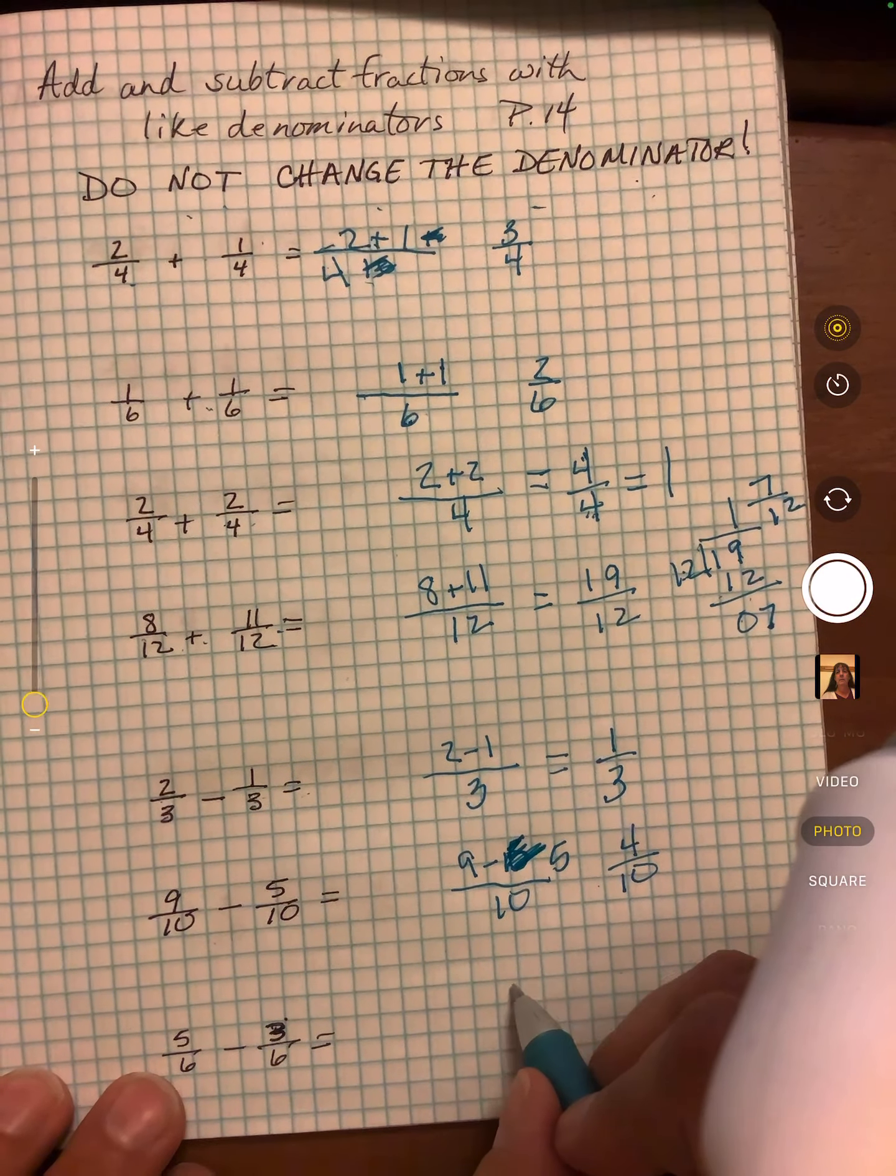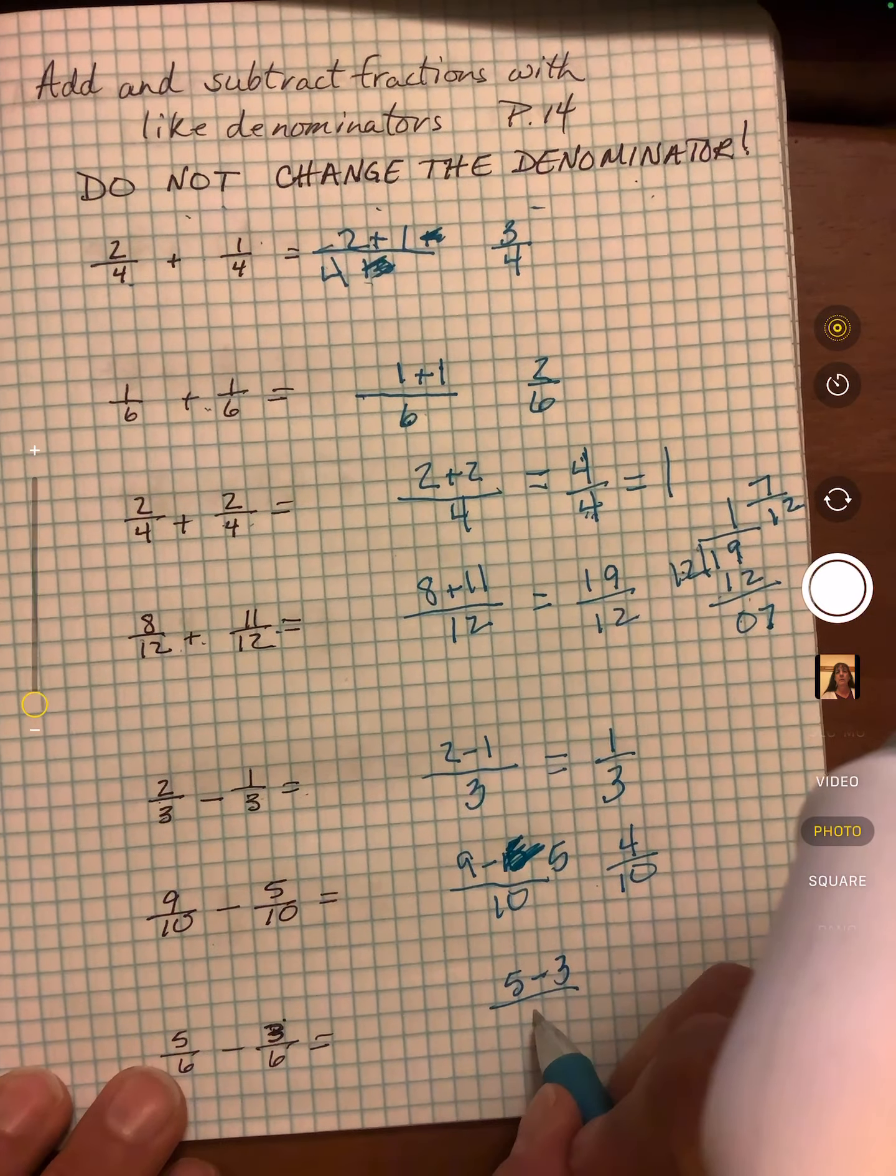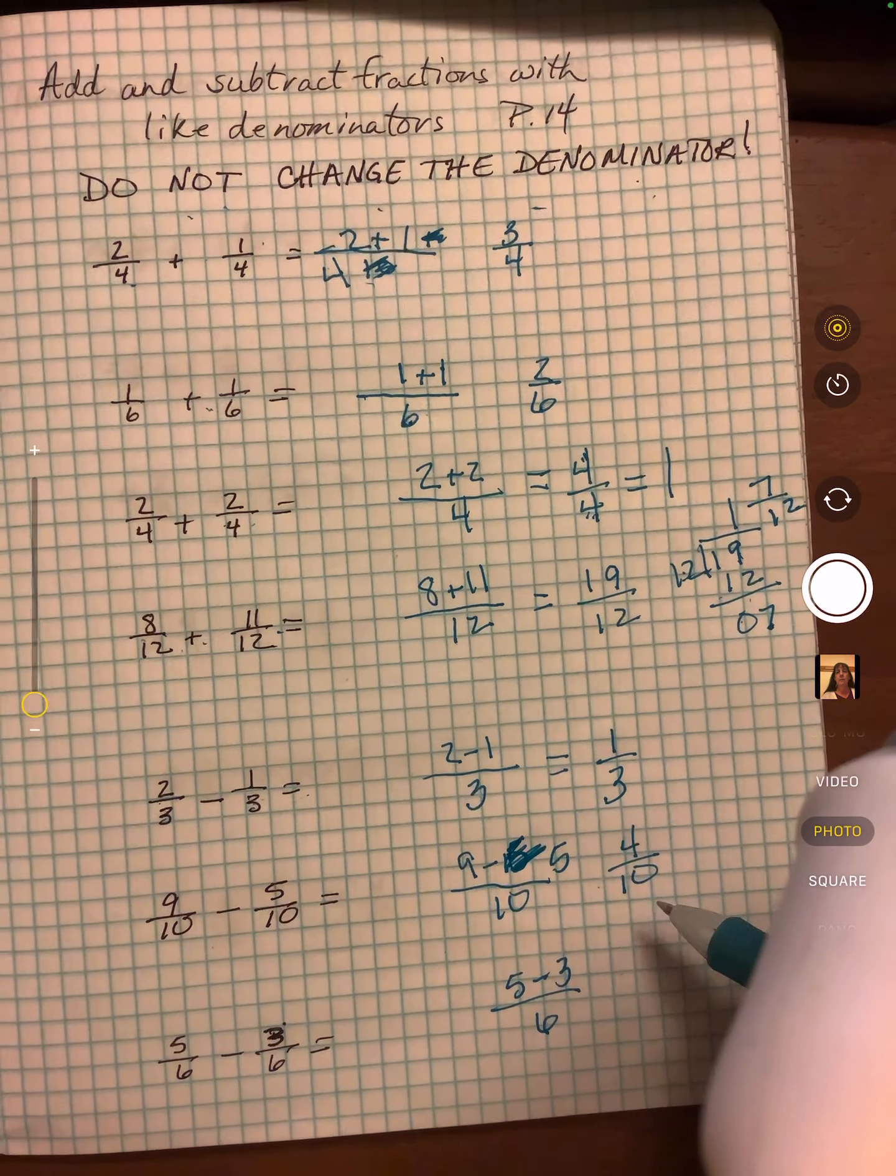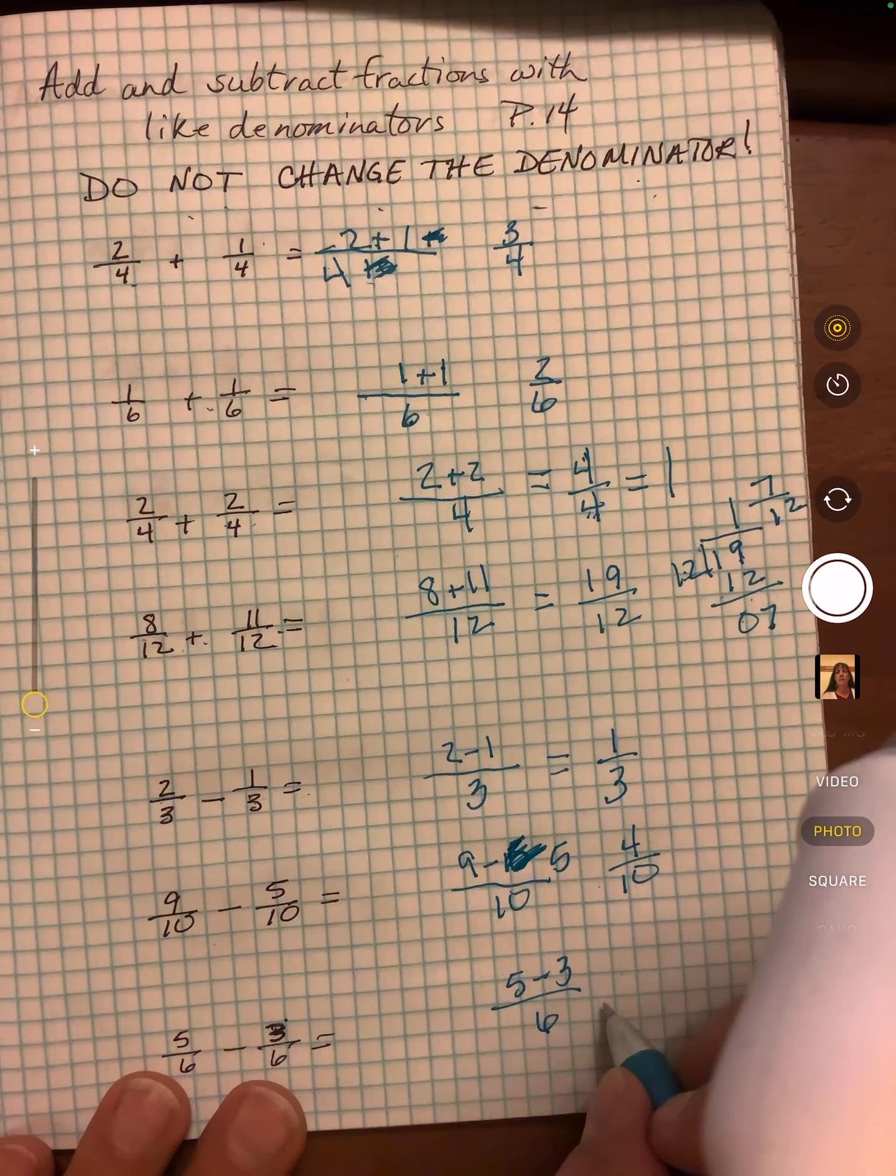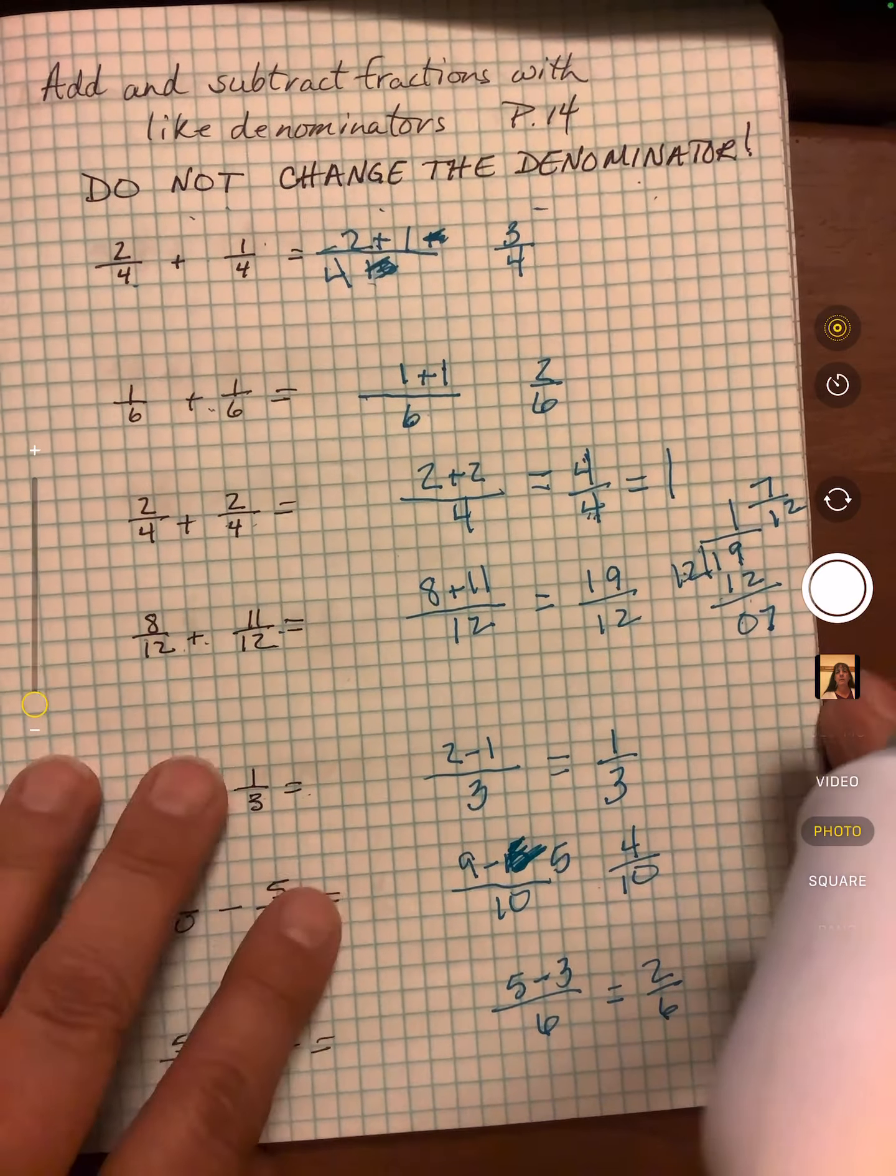Five sixths minus three sixths. We can go like this. Five minus three over six because our denominator is the same. Five minus three equals two sixths.